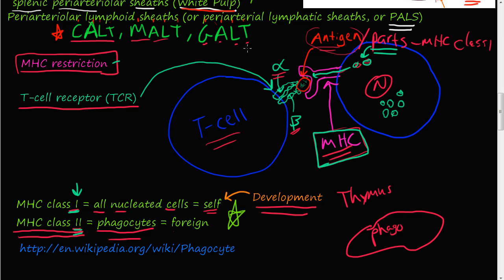T cells — floating in the blood or in the locations we discussed — have a T cell receptor (TCR), usually made up of an alpha and a beta unit. This TCR will sense the peptide displayed on MHC class 1. If it's a normal self-part, a mature T cell will recognize it as normal and not alert the immune system. There's no immune response.